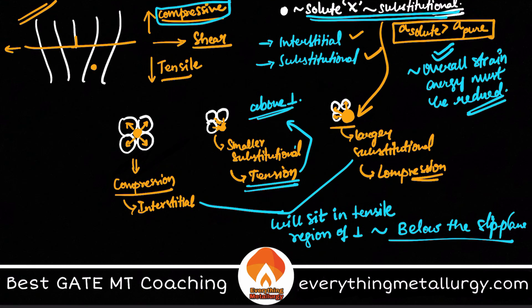Coming back to our question: solute X is substitutional and, from the XRD analysis, its size is larger than the matrix A. This is the case of a larger substitutional solute, which creates compressive strain. Therefore X will preferentially sit below the slip plane in the tensile strain field of the edge dislocation.